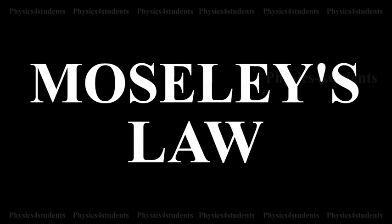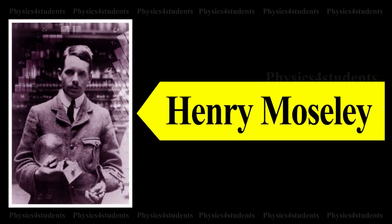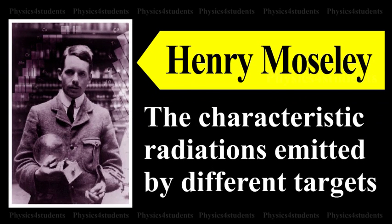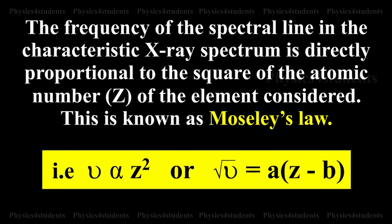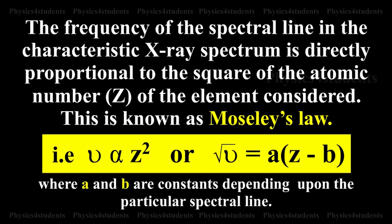Moseley's Law. Moseley investigated systematically the characteristic radiations emitted by different targets. Based on his experiments, he concluded that the frequency of the spectral line in the characteristic X-ray spectrum is directly proportional to the square of the atomic number of the element considered. This is known as Moseley's Law, expressed as √ν = A(Z − B), where A and B are constants depending upon the particular spectral line.